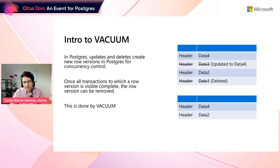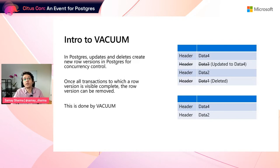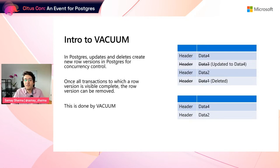Before we go into autovacuum and its specifics, I want to spend just a couple of minutes talking about what vacuum is and what autovacuum does. In Postgres, when you update or delete a row, it generally does not just remove or update the row immediately. It creates a new version of the row so that other connections that have already been accessing the older version can continue to do so. Those older row versions are called dead tuples or obsolete tuples — different names used interchangeably.